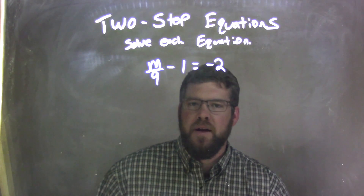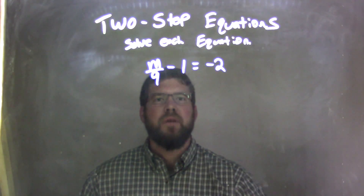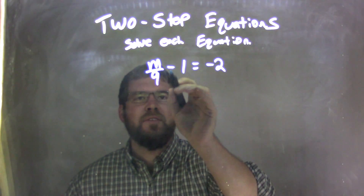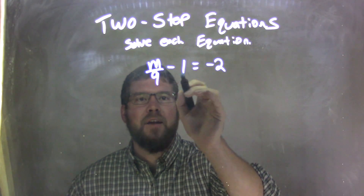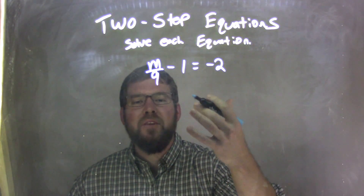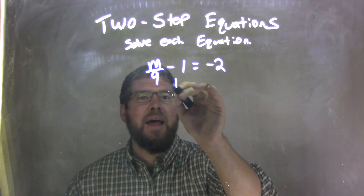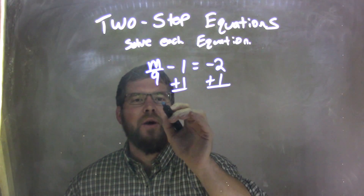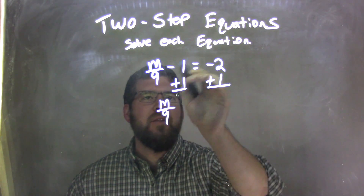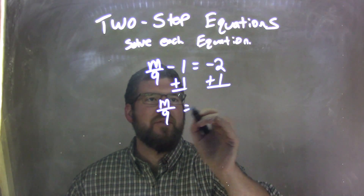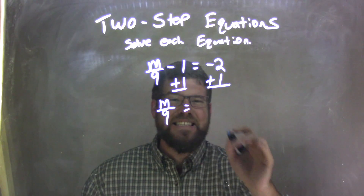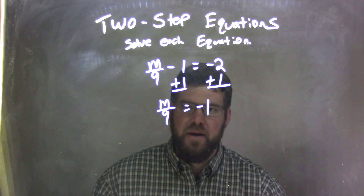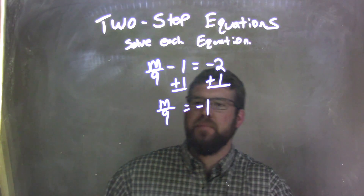So if m over 9 minus 1 equals negative 2, what I need to do here first is address that subtracting 1 — minus 1. The opposite of that is adding, so I'm going to add a 1 to both sides. By doing so, I can bring down the m over 9, these ones will cancel, and I'm left with negative 2 plus 1, which is negative 1. So m over 9 equals negative 1.